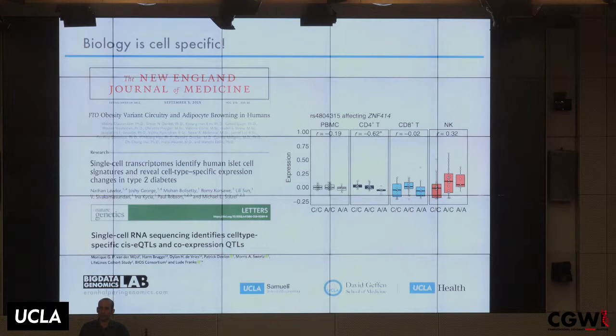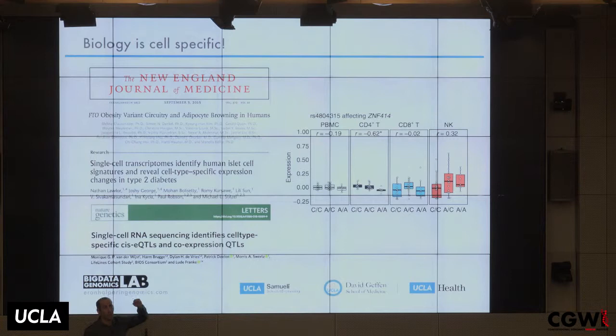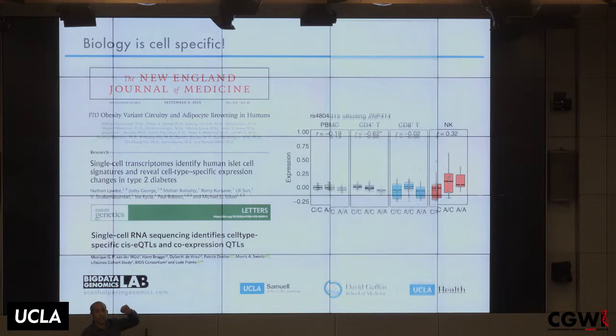All of this is great, but we've only estimated the fraction of each cell type in a sample. Biology is really cell-specific — things happen differently in different cells, and even within the same cell type across individuals. For example, if you look at a specific SNP and its gene expression across different cell types, the gene expression behaves differently in each cell type — and you wouldn't see this when looking at bulk measurements.